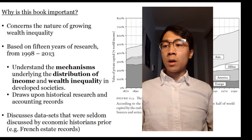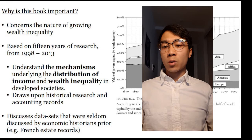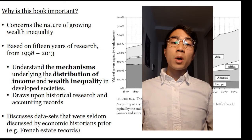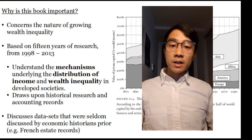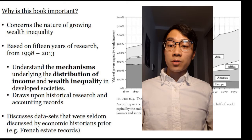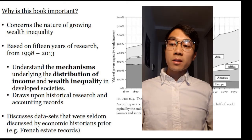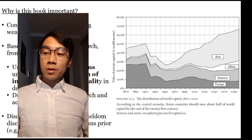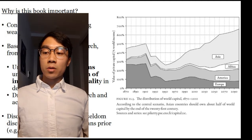So why is this book important? This book concerns the nature of growing wealth inequality for the last 150 odd years. Even though the book is entitled Capital in the 21st Century, it primarily covers capital in the late 19th century and 20th century, as well as some modest projections of the future of wealth inequality in the 21st century. This book is based on 15 years of research from 1998 to 2013, and his intention is to understand the mechanisms underlying the distribution of income and wealth inequality in specifically developed societies. He draws upon historical research and accounting records to support his points, discussing data sets that were seldom discussed by economic historians prior.